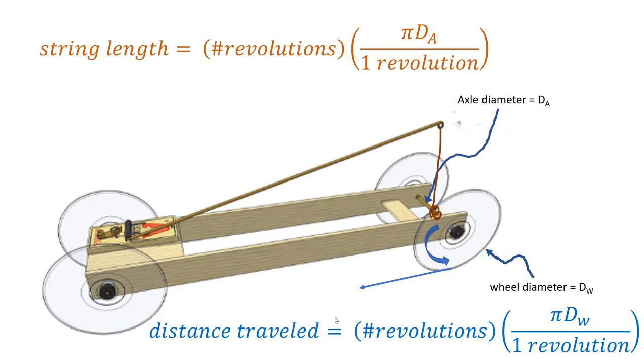So we want to maximize the distance traveled. You can either design for speed or design for distance, and those are two different designs.